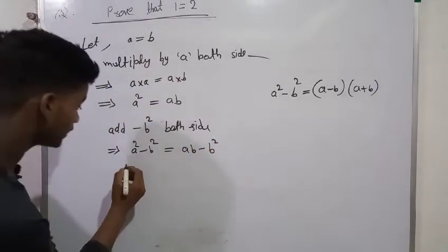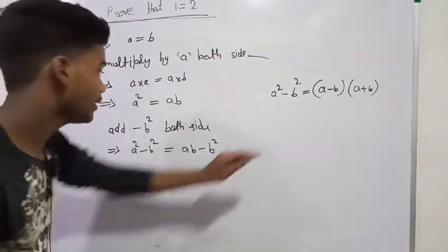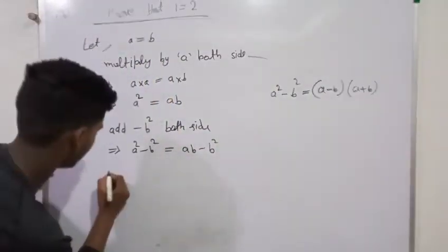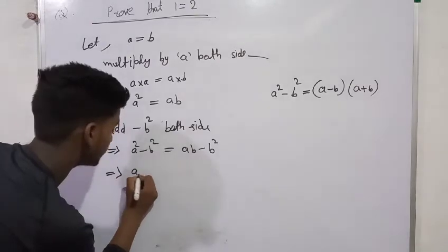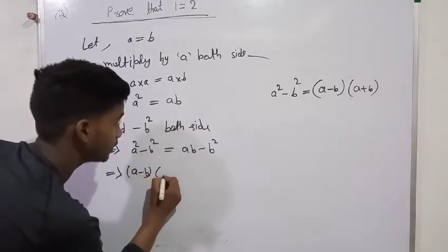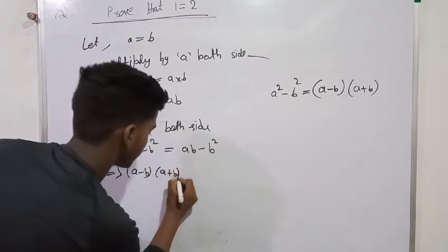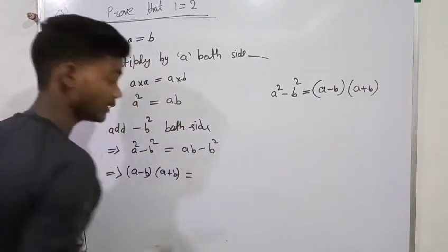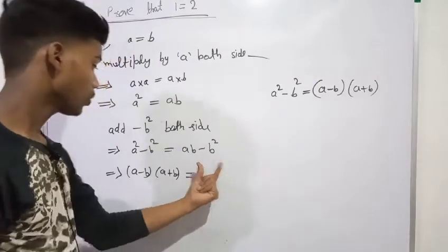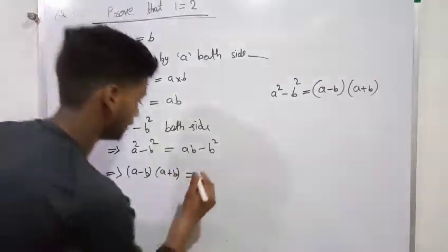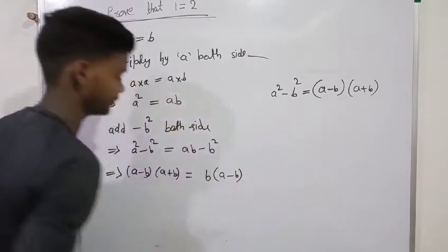We have this formula which we have already explained here. On the left side we apply the difference of squares formula: A minus B, times A plus B. On the right side, B is common, so we factor out B to get B times A minus B.